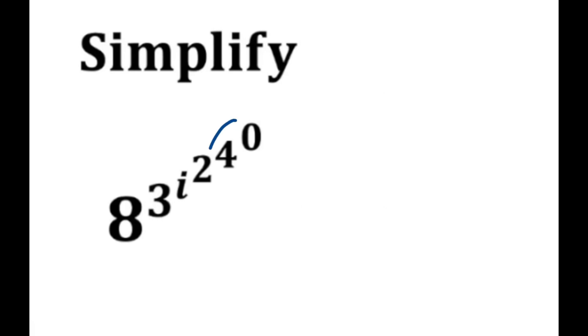When we look at this power tower, we need to first look at four to the power of zero. Anything to the power of zero we know is one, so we can just erase this and make that equal to one.